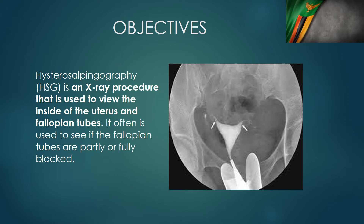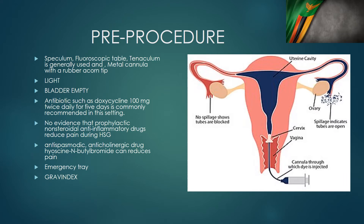A hysterosalpingogram is an x-ray that we use to look at the uterus and the fallopian tubes. To be more precise, you are looking at the endometrial cavity of the uterus, not the uterus itself, and you are looking at the inside of the tubes, not the outside. You are also looking at the length, curvature, and contour of the tubes, as well as the contour of the endometrium — all of this comes out in an HSG, as we commonly call it.